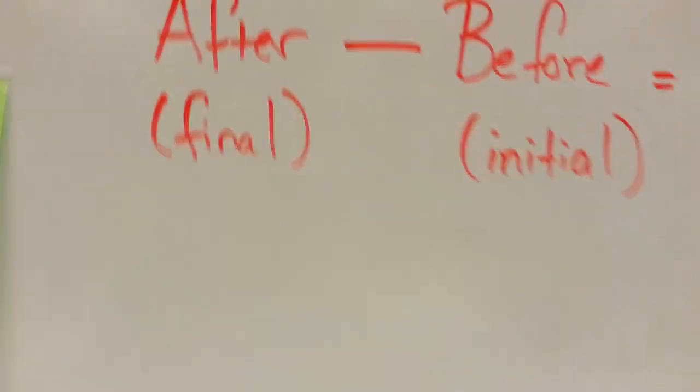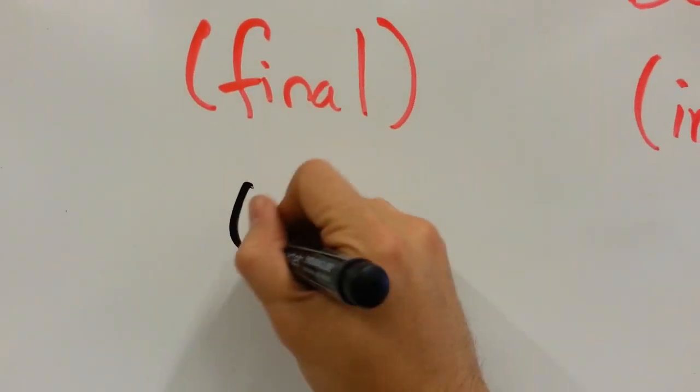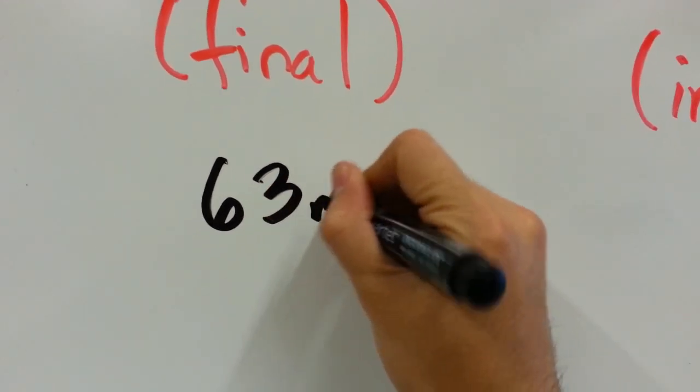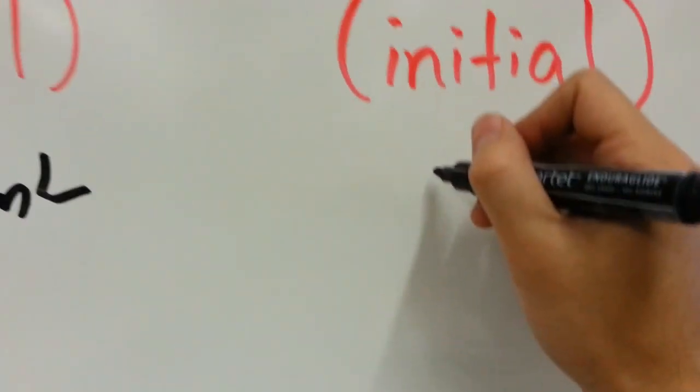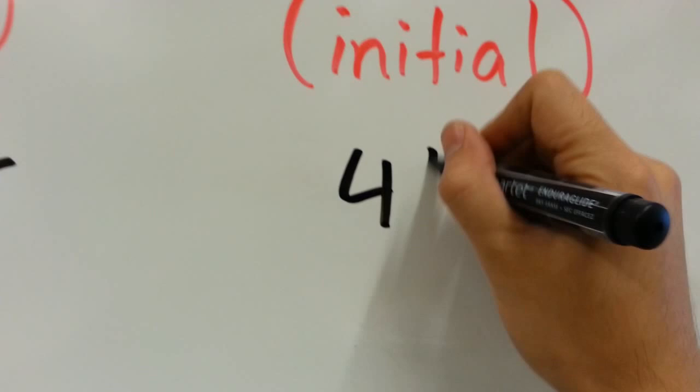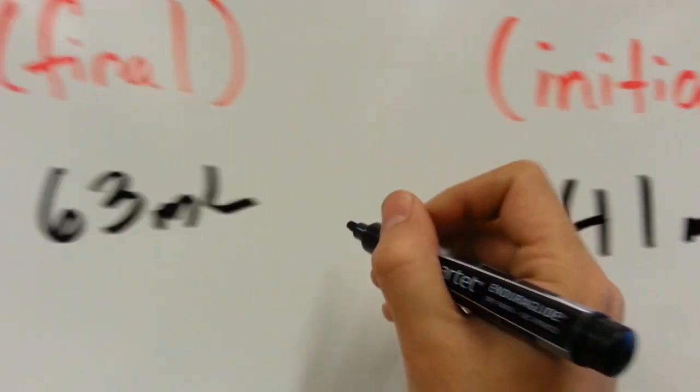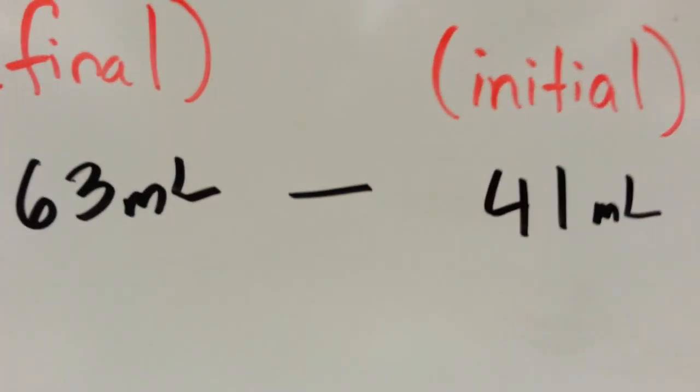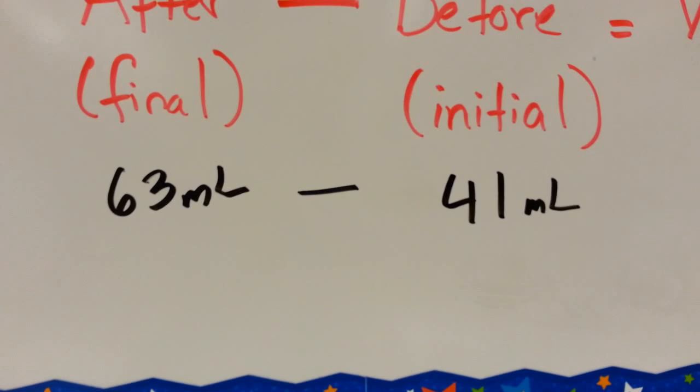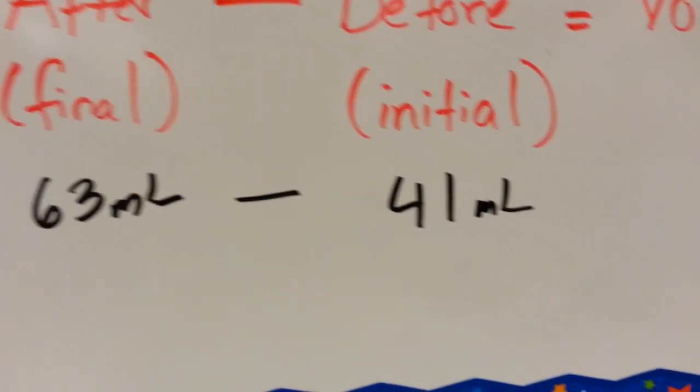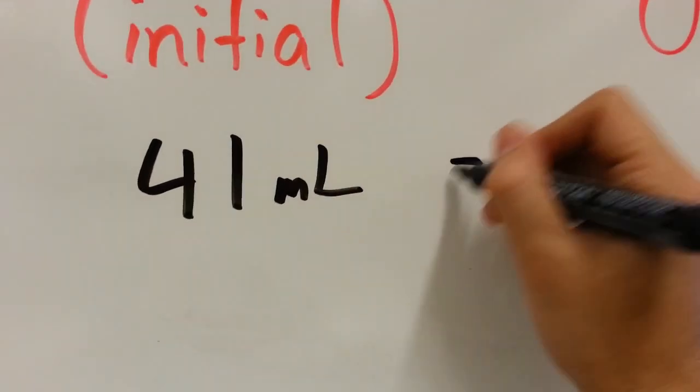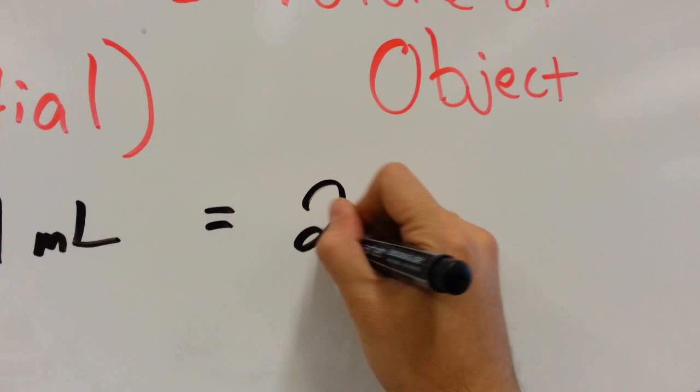So in this case, the after was 63 milliliters, and the before was 41 milliliters. I'm going to subtract the two. And in my head, that's about 22. So the volume of the object is going to be 22.